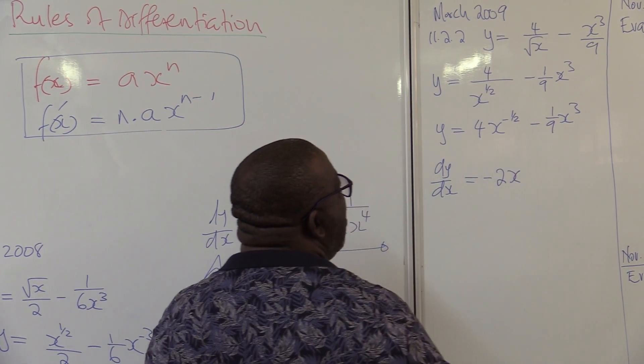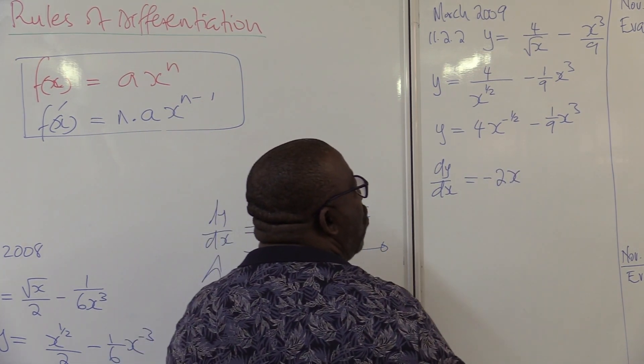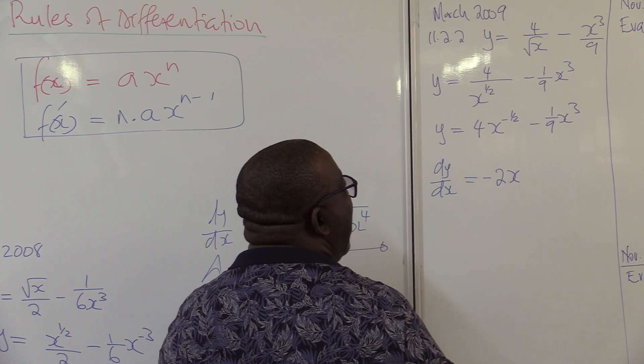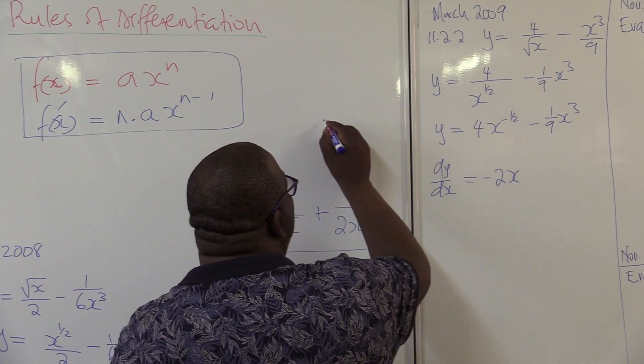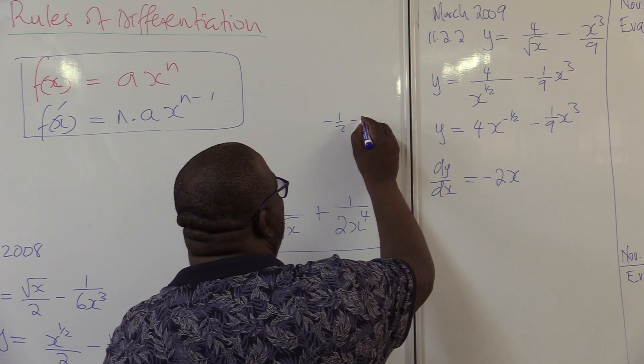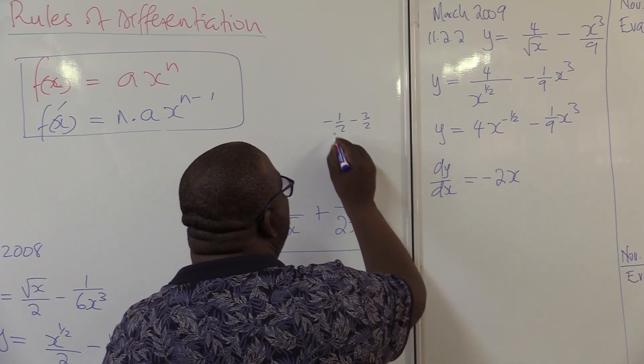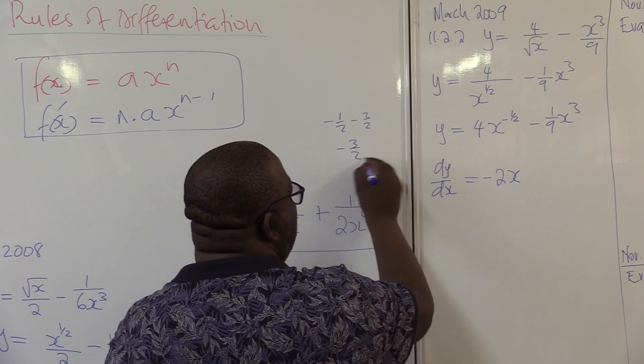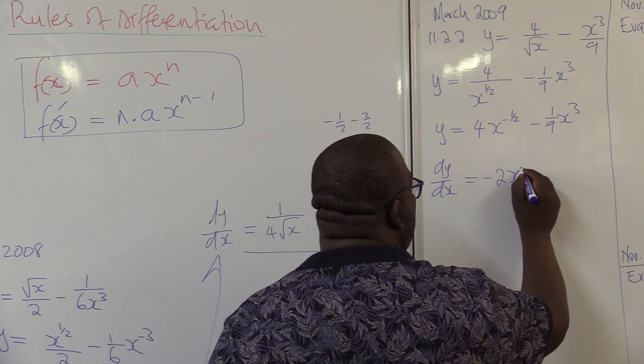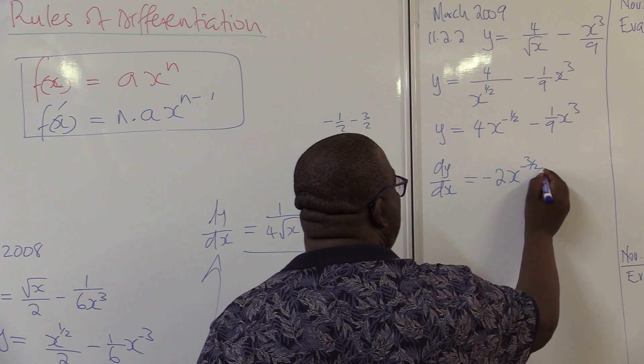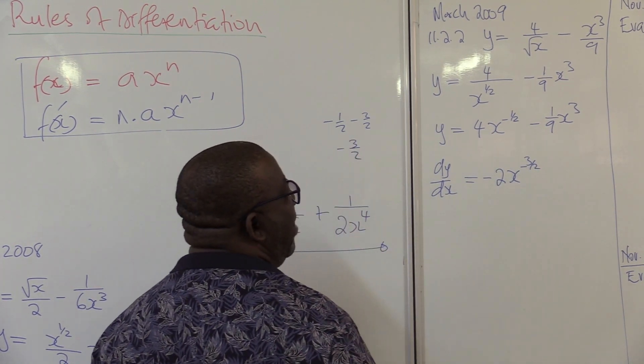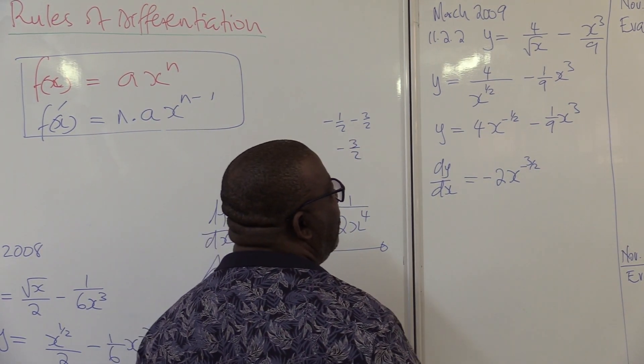x to the power minus half minus 1. Minus half and minus 1. So this will be minus 3 over 2. That's what we have here. It will give us minus 3 over 2. Minus half minus 1 is minus 1 and a half.